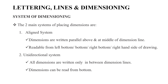Next, we will look at the systems of dimensioning. There are two main systems. The first is the aligned system, where dimensions are written parallel to the dimension line and can be read from the left or right side.